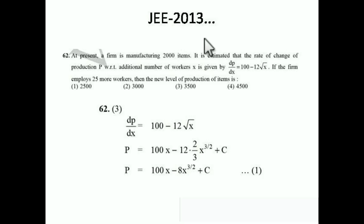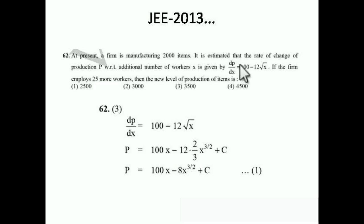See, this is the first question asked in JEE 2013. You don't need any special idea — just use your basic understanding. At present, a firm is manufacturing 2000 items. It is estimated that the rate of change of production p with respect to additional number of workers x is given by dp/dx.